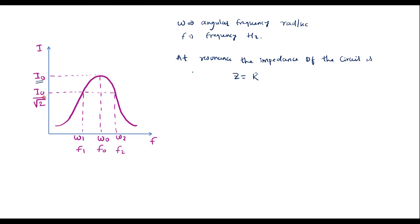Now let me consider I0 by root 2. That is, when the current has fallen to I0/√2, the frequencies obtained are represented as ω1, ω2, or F1, F2. These two frequencies are known as half-power frequencies.